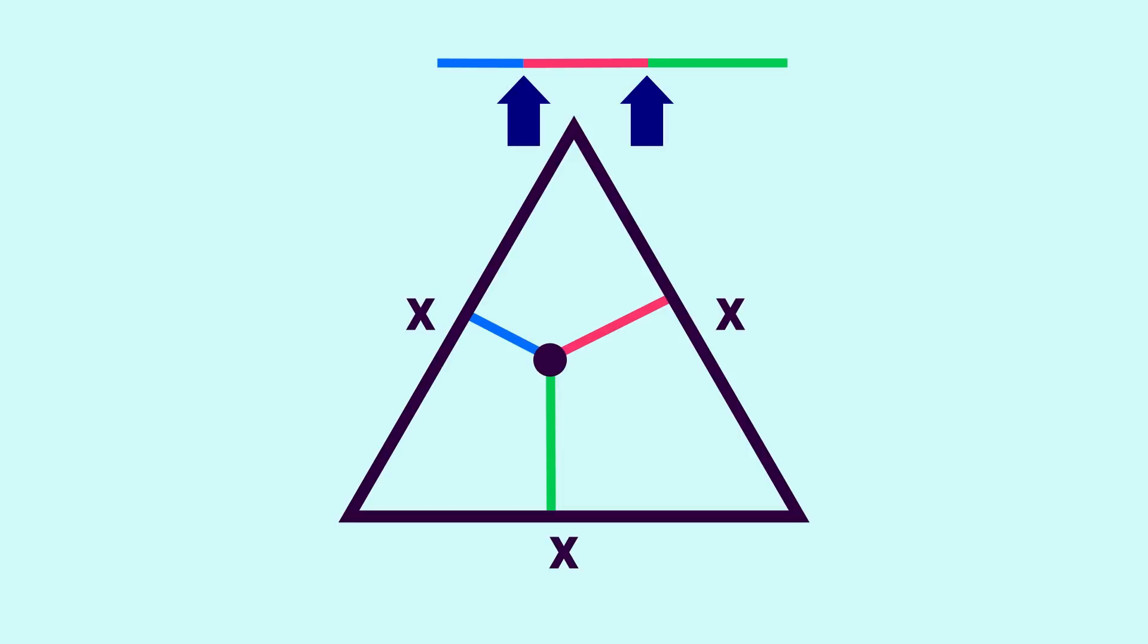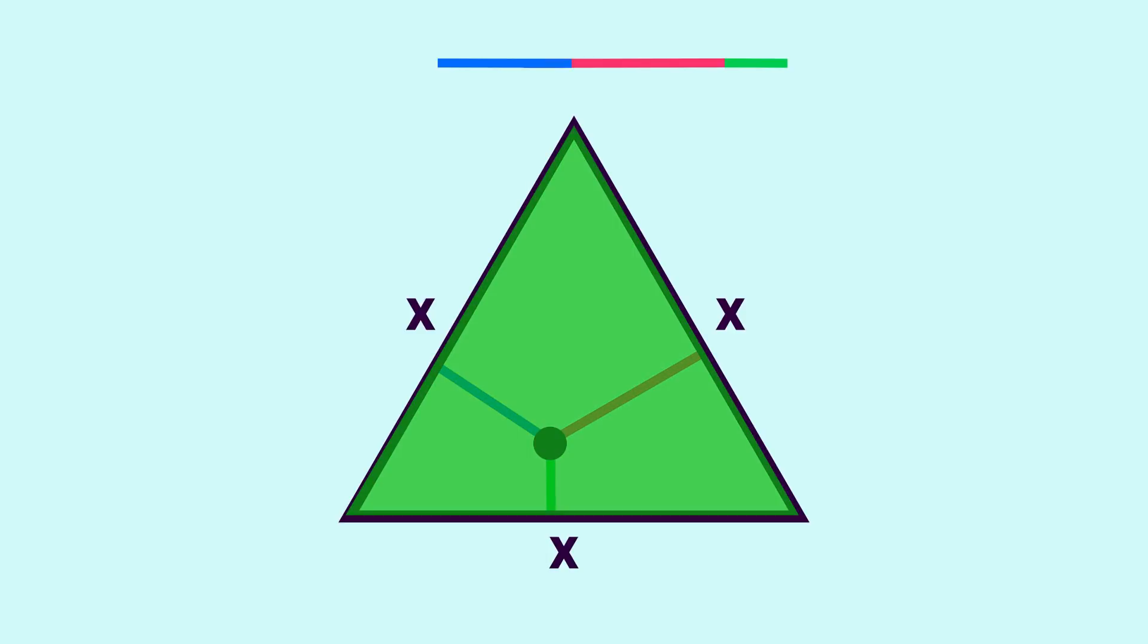And as we move the interior point around, the overall length stays the same, but we change the locations of those two cuts. So, all the interior points of this triangle correspond to every possible way you could cut this stick in two locations. And at this point, for example, we see it does correspond to a possible triangle.